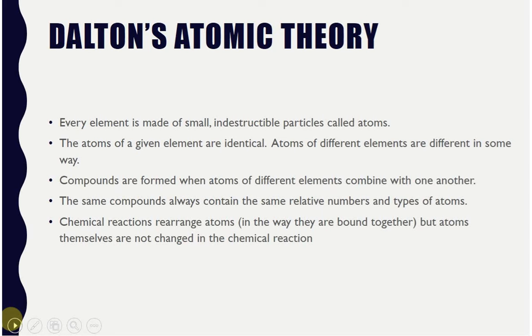Charles Dalton came up with an atomic theory. And in that theory, he said that all matter is made of these small indestructible particles called atoms. He kind of viewed them like marbles. They were homogenous. They were solid. And he thought that every atom of an element is going to be identical. Different element, they would be different. Whenever you had more than one element bond together, you would get a compound. And those compounds were always going to have the same number and type of atoms. And then chemical reactions would involve some kind of change to the atom, whether it was how they were bonded or how they were arranged. But the atoms themselves wouldn't be really changed.